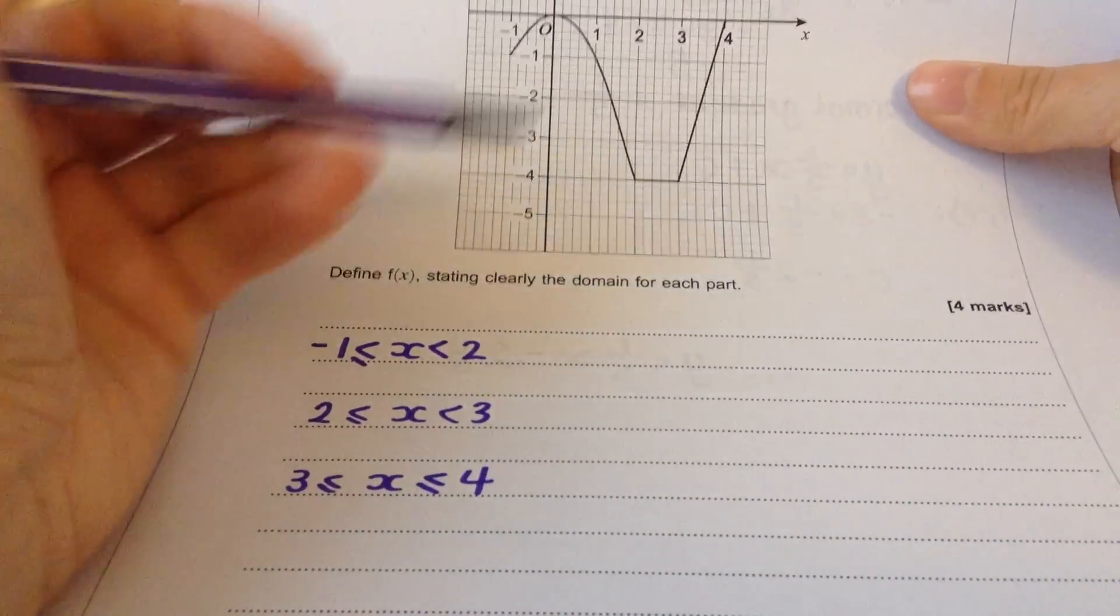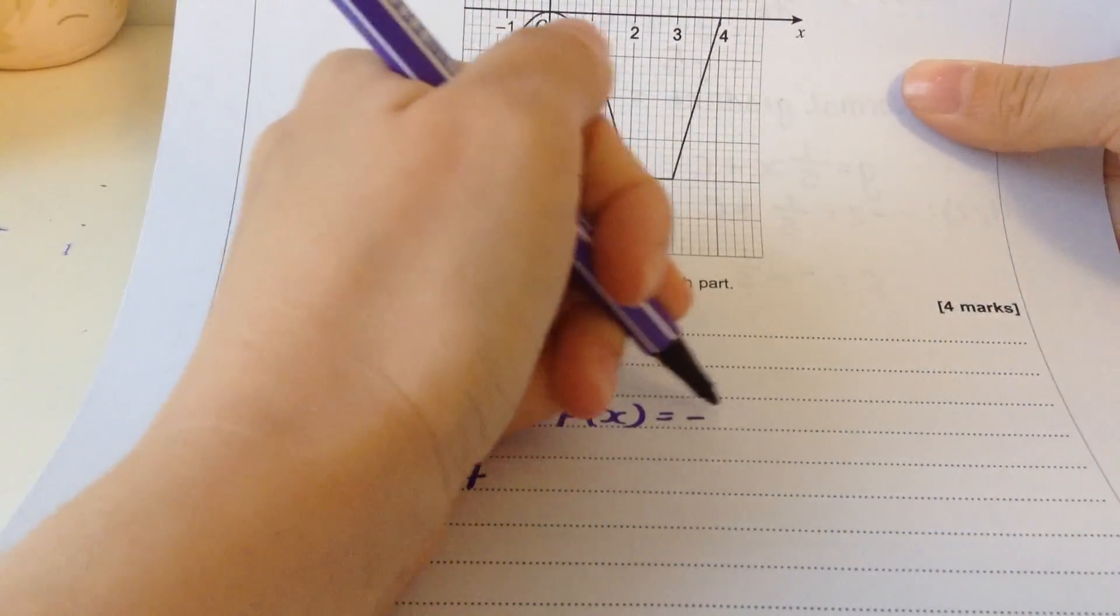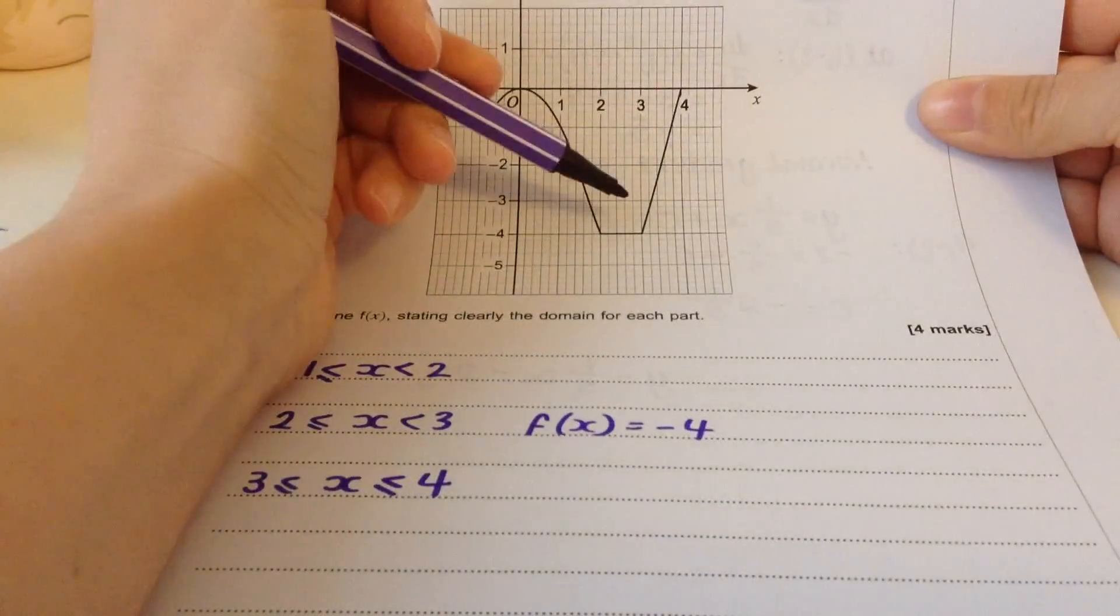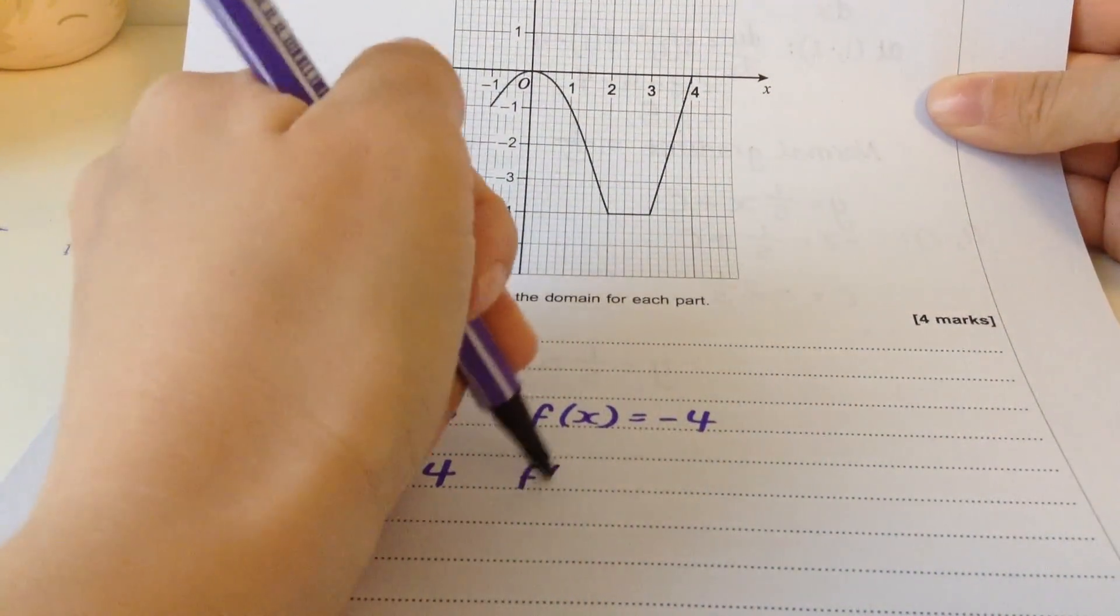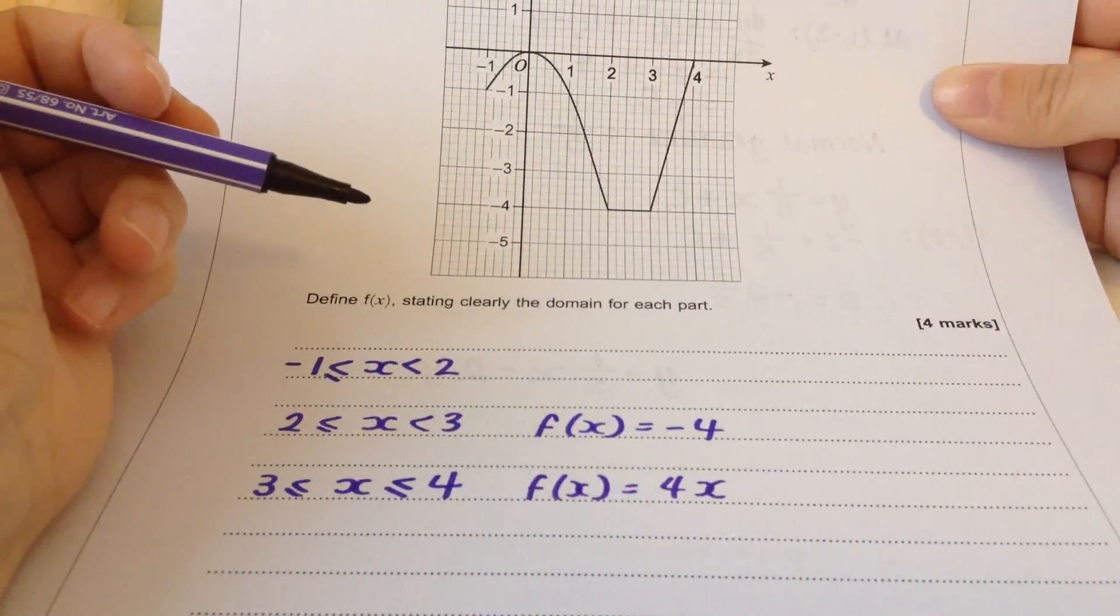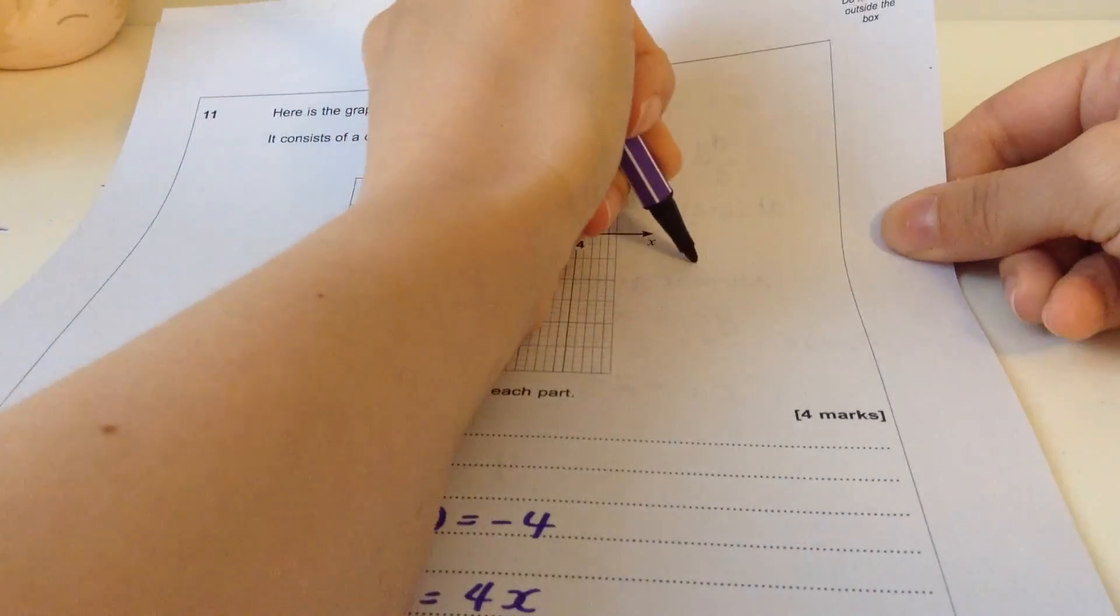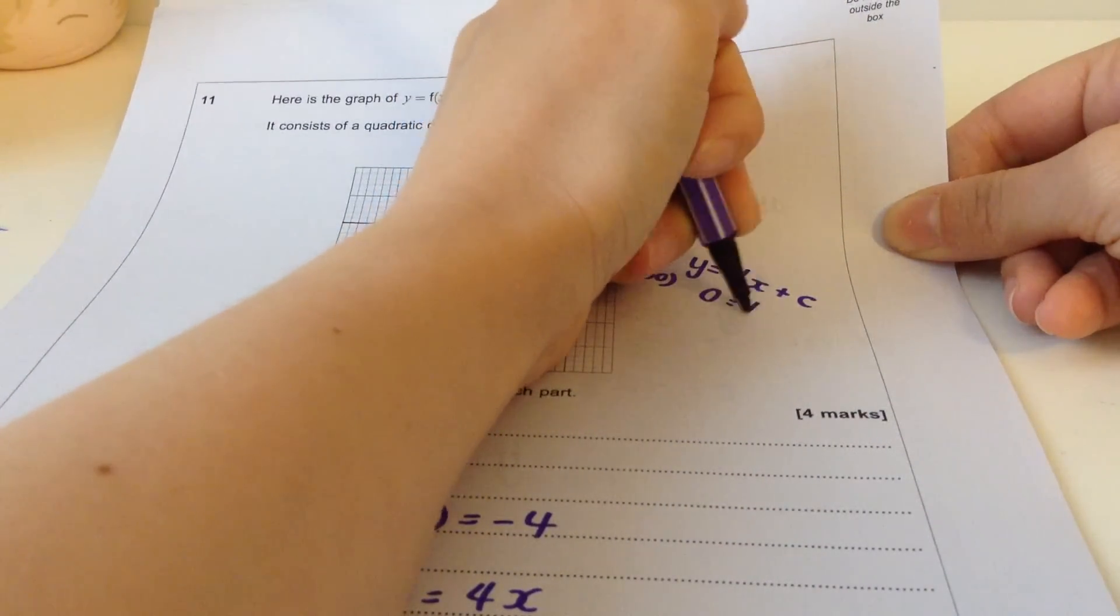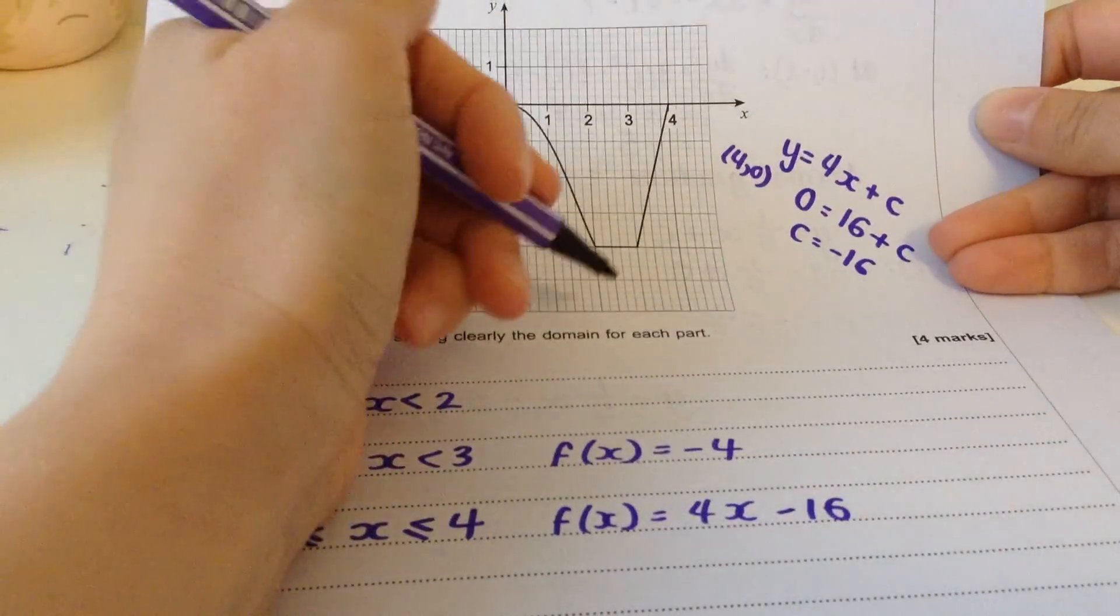Let's do the easy section first. The flat bit, the equation of that is just going to be y equals minus four, sorry, f of x equals minus four. And let's do the linear bit here as well. The gradient of this is rise is four, step is one, so the gradient's four. And it passes through four zero.